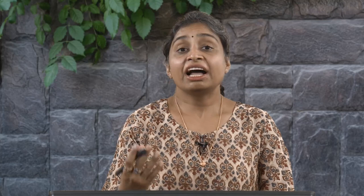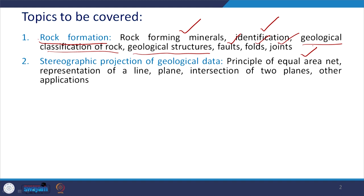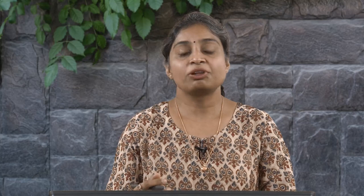After rock formation, we will discuss stereographic projection of geological data — why it is required and how it is done. Components include the principle of the equal area net, how to represent a line in 3D space in 2D form, how to represent a plane, the intersection of two planes, and other applications of stereographic projections of geological data.